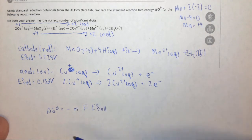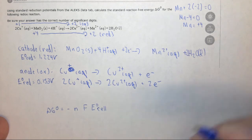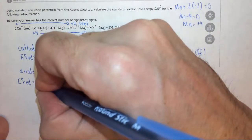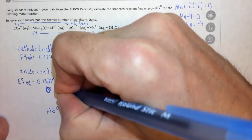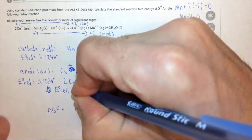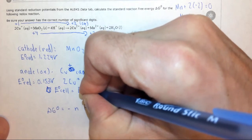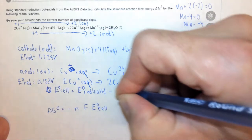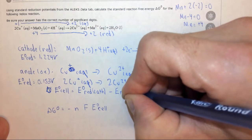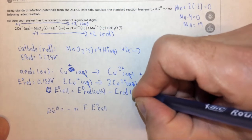We still haven't figured out the E naught of the cell. So recall that E naught for the cell is equal to the reduction potential at the cathode, minus the reduction potential at the anode.